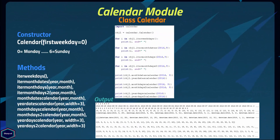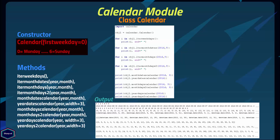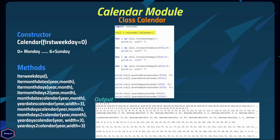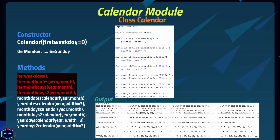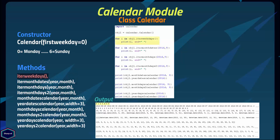Now let's look at the Calendar class provided by the calendar module. The __init__ method takes the optional argument first_weekday, which by default is set to 0, where 0 represents Monday and 6 represents Sunday. In this example I created an instance of the Calendar class without the optional argument, so the first weekday is Monday. The first four methods of the Calendar class are very similar and they all return an iterator object. The iterweekdays() method returns an iterator for the weekday numbers used for one week.